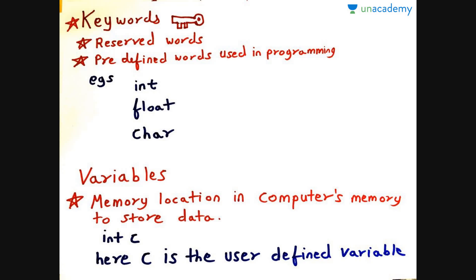Now let us move to the variables. We all know the meaning of the term variable means it keeps on changing. Variables are memory locations in the computer's memory to store data. The example is int C. Here C is the user defined variable.